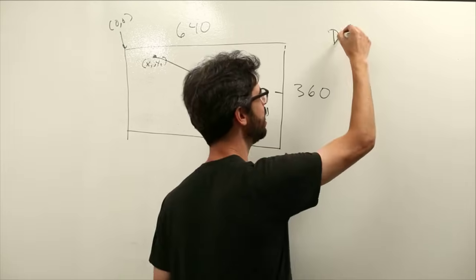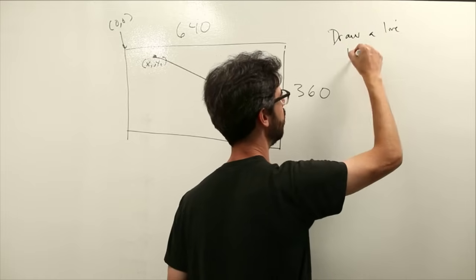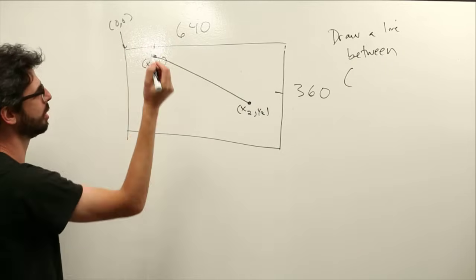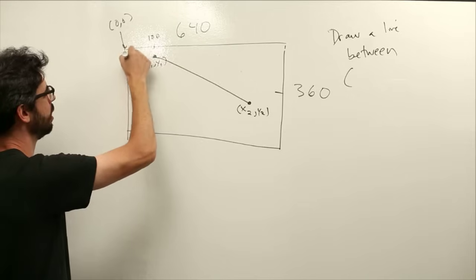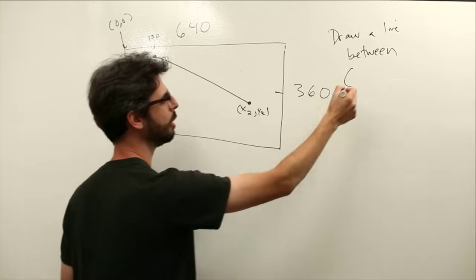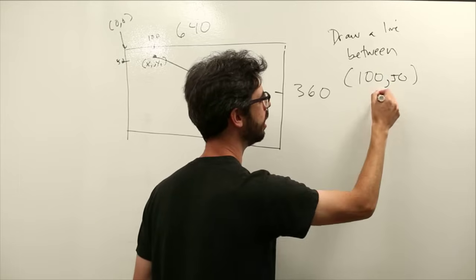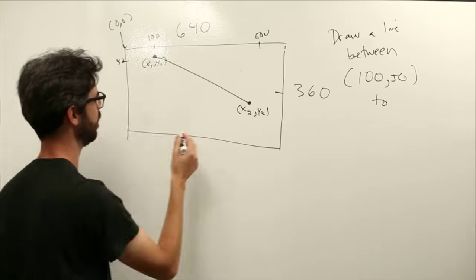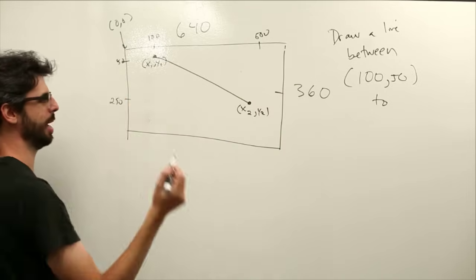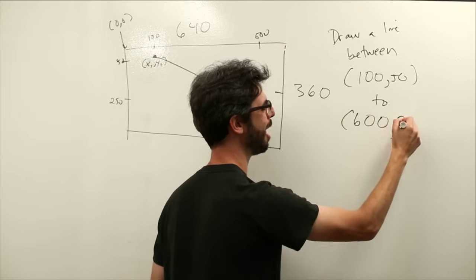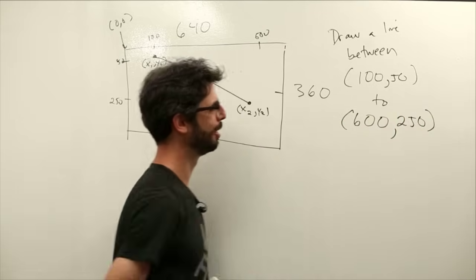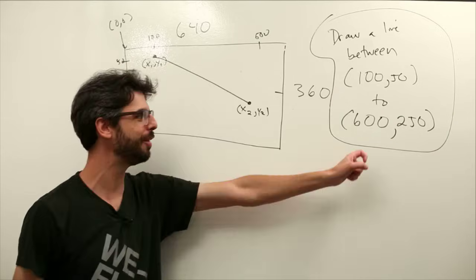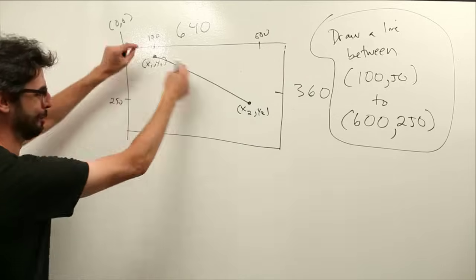To draw a line, we might say in English: draw a line between - maybe this is about pixel 100 and this is about pixel 50. Draw a line between 100, 50, to maybe pixel 600 and pixel 250, to 600, 250. This is how we would write that in English. Draw a line between 100, 50 to 600, 250.